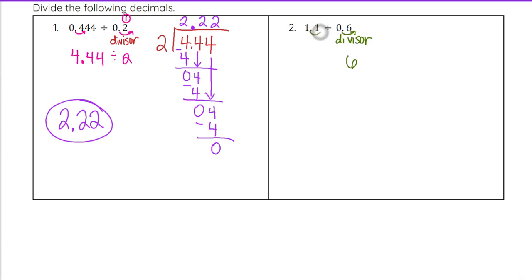And if I do that here, then I need to do the same thing over here. So that's going to be 11 divided by 6, which will get me the same result as if I were to do 1.1 divided by 0.6. Okay, so once I get rid of that decimal point in the divisor, whether or not the dividend has a decimal point as well does not really matter.